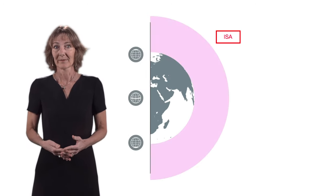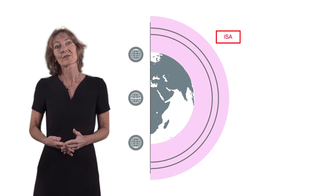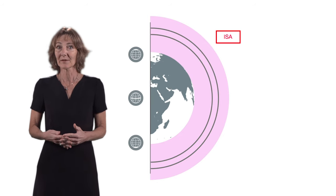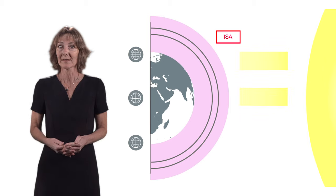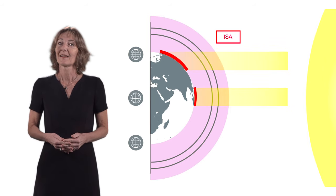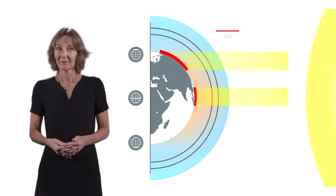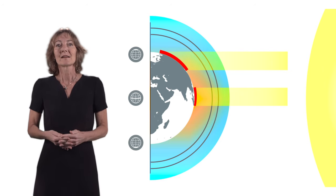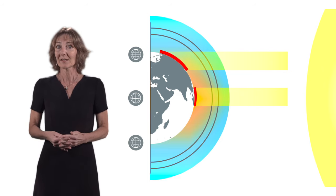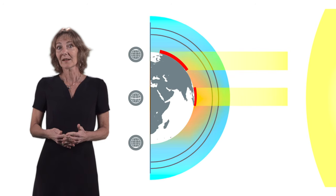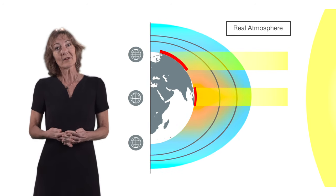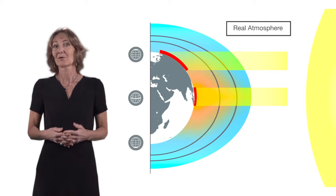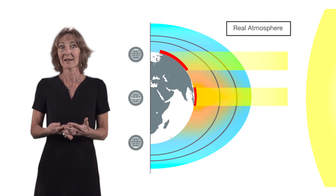Imagine for a moment the ISA atmosphere around the Earth without solar energy. Because Earth is a sphere, the quantity of energy received from the sun at the surface is not even. The atmosphere is warmer at the equator and colder at the poles. The equator receives more of the sun's heat and the atmosphere expands. The inverse is true at the poles. The atmosphere is colder, therefore less deep.